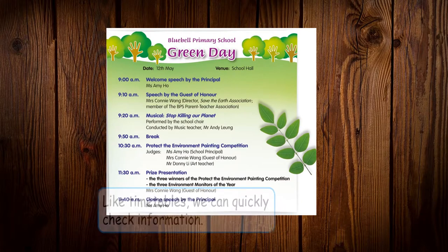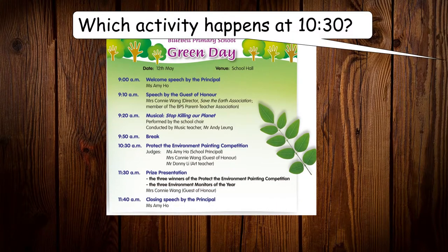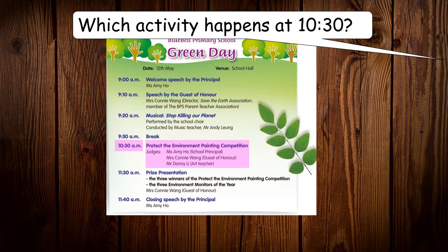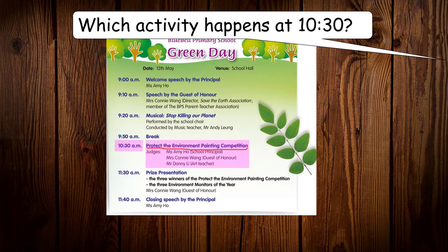For example, which activity happens at 10:30? It says 10:30am here. That means the Protect the Environment Painting Competition will be held at 10:30am. You can learn things by reading the time and the name of the event.